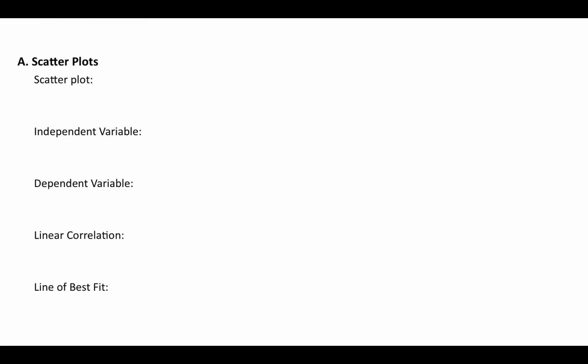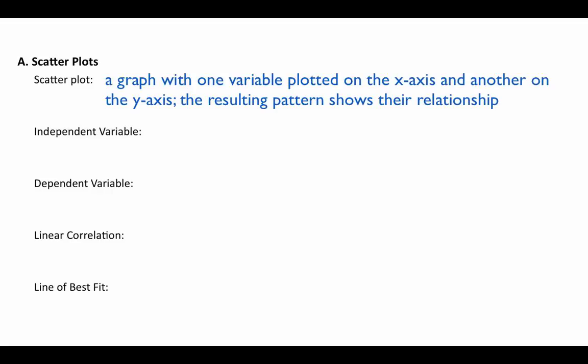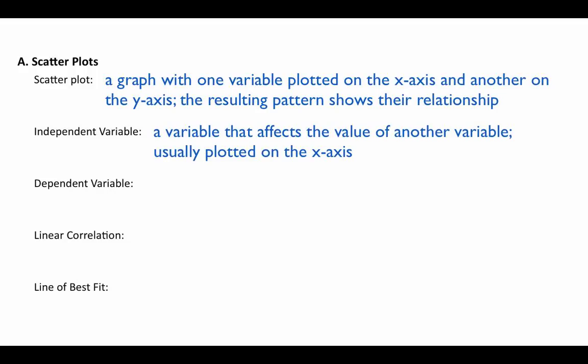To begin, we need to look at scatter plots, because histograms show the frequency of one variable — now we need to show the frequency of one variable and another variable at the same time. Scatter plots can show an independent and a dependent variable simultaneously. A scatter plot is defined as a graph with one variable plotted on the x-axis and another on the y-axis. One variable is on the x, one is on the y, and the pattern in the data shows the relationship between the two.